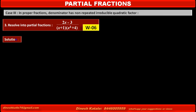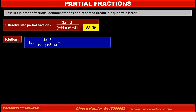Solution. Let the given fraction (2x minus 3) upon (x plus 1)(x squared plus 4), where the denominator has two factors: (x plus 1), a linear factor, and (x squared plus 4), a quadratic factor. So it equals A over (x plus 1) plus (Bx plus C) over (x squared plus 4).